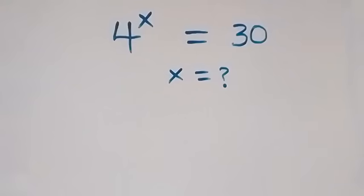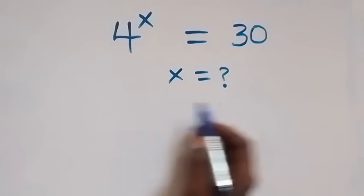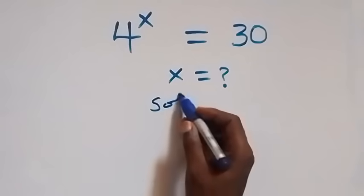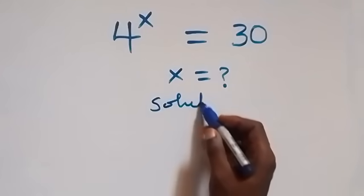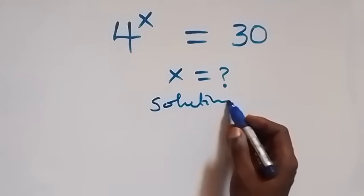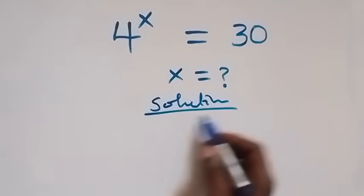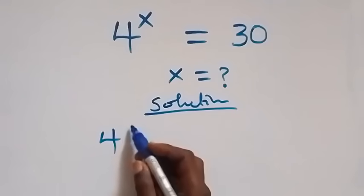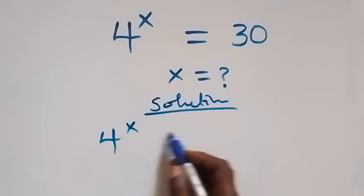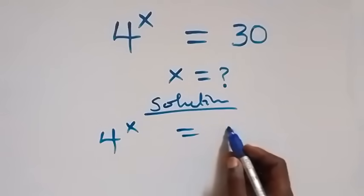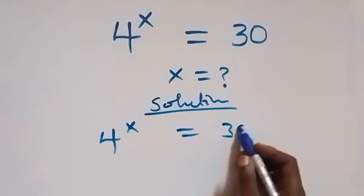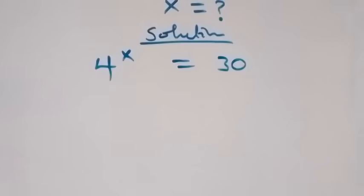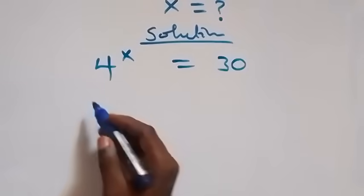Hello, you are welcome. How to solve this nice exponential equation. We are given 4 raised to power x equals 30, and here we can take the log on both sides.